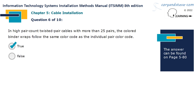In high pair count twisted pair cables with more than 25 pairs, the colored binder wraps follow the same color code as the individual pair color code. This statement is true.